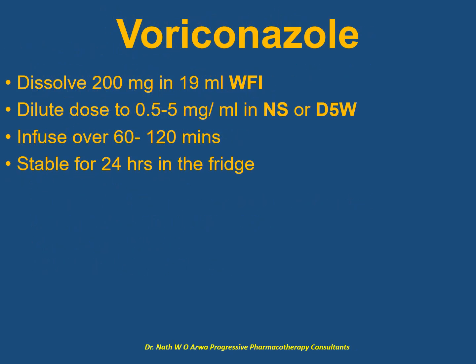For voriconazole, dissolve the 200 mg vial in 19 ml of water for injection. The dose should be further diluted so that the final concentration in the IV bag is between 0.5 and 5 mg per ml in normal saline or dextrose 5%. This dose should be infused over between 1 and 2 hours, and such IV solutions remain stable and viable in the fridge for one day.